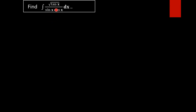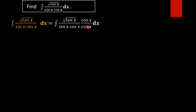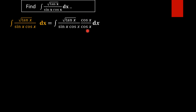In order to find the value of this integral, we are multiplying and dividing by cos x in the numerator and denominator. This function is not in an integrable form, so to make it integrable we multiply cos x to numerator and denominator. If we multiply cos x like this, it will cancel each other and give 1, so it makes no difference to the function.